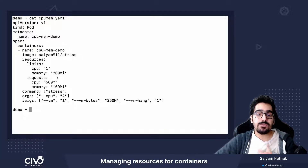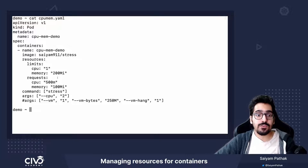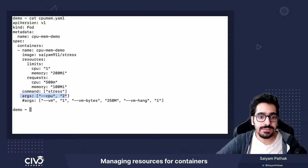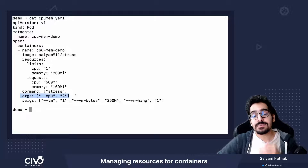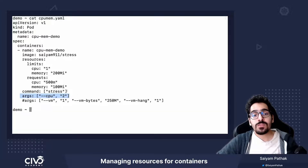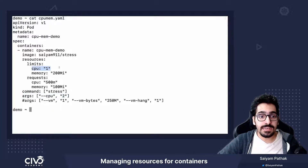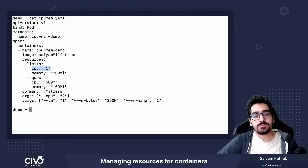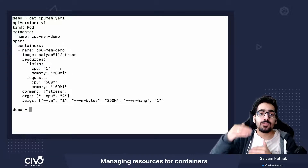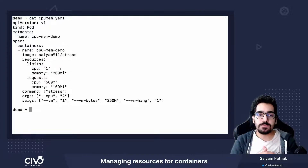If we try to ask for more CPUs — like in this case, in the argument section you can see the container is trying to ask for two cores and the limit is one — what will happen is Kubernetes will throttle the CPU of this particular container.